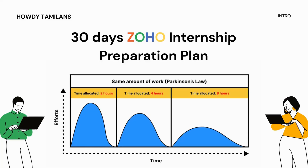We are going to talk about Parkinson's Law — the idea that work expands to fill the time available. For example, if you are cleaning a room and you give yourself 20 minutes, you will clean it in 20 minutes. If we shrink the time, we will be able to focus our efforts more effectively.